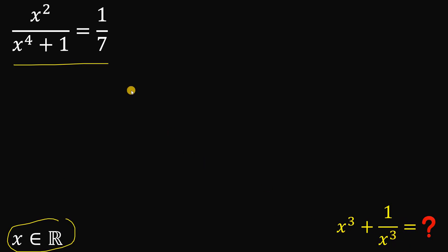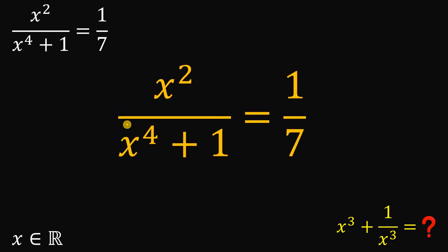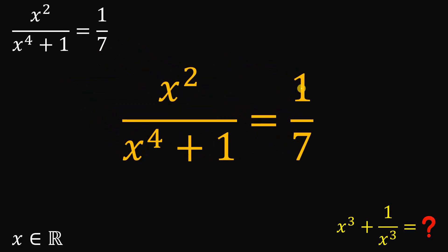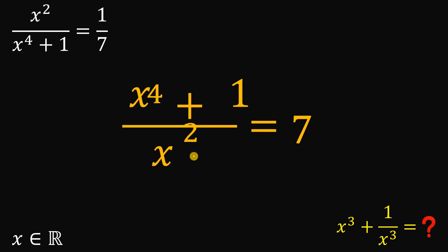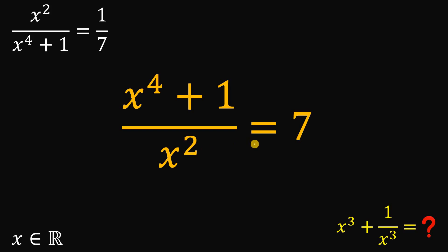To answer this question, let's start with the given equation: x squared over x to the fourth power plus one equals one over seven. This is unusual because the larger power of x is in the denominator. So let's take the reciprocal of this equation, giving us x to the fourth power plus one over x squared equals seven over one, or simply equal to seven.